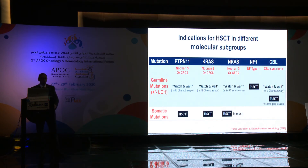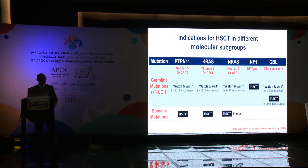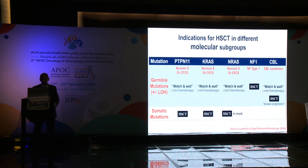For somatic mutations in PTPN11, KRAS, or NRAS, rapid transplantation is indicated when a donor is available. For germline mutations, one should suspect transient myeloproliferative disorders, observe with watch-and-wait, and consider mild chemotherapy if aggressive progression occurs. Germline NF1 represents aggressive JMML requiring proper transplantation. Germline CBL is also JMML, but watch-and-wait is appropriate; transplant is pursued if disease progresses.